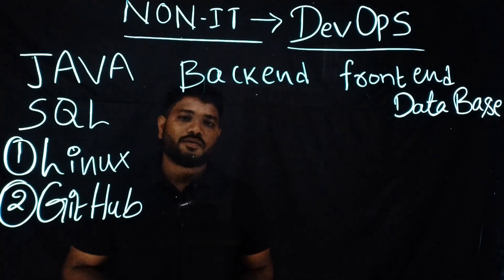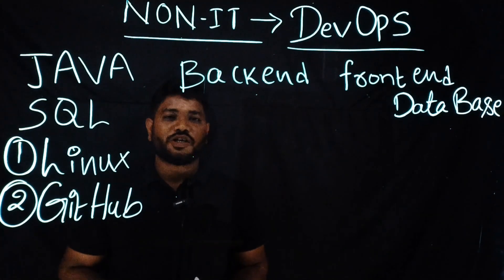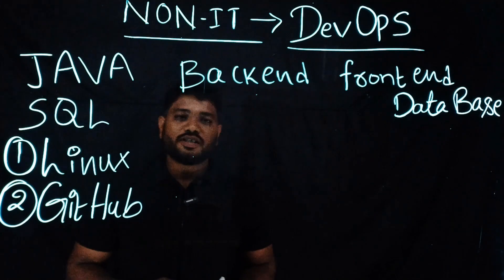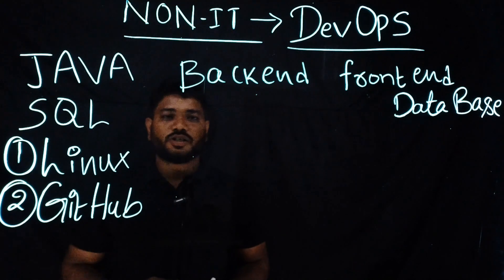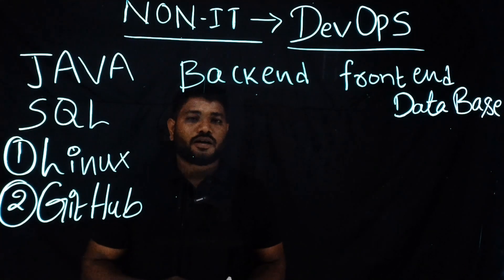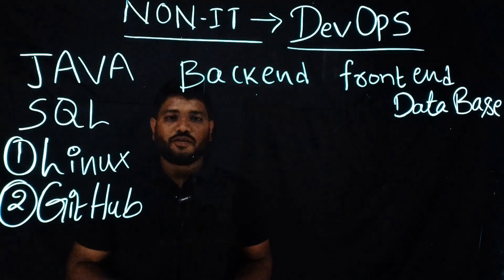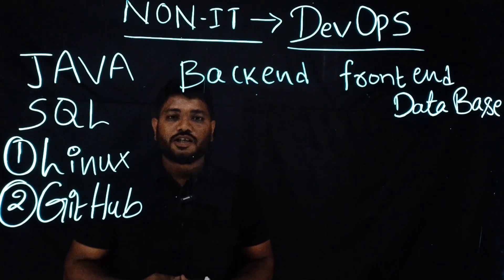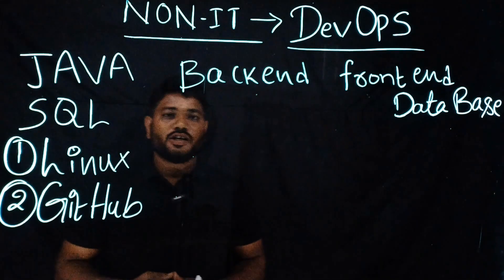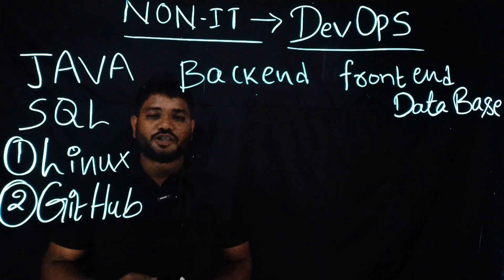Being a DevOps engineer, you should have fair knowledge on automation — how to automate deployment in production or developer environments. For CI/CD — continuous integration, deployment, and delivery — there are many tools available in the current market. As a beginner, I suggest you start with Jenkins. Jenkins is user friendly, and you can easily create jobs, create slaves as runners, configure them, and run all the automation tasks. For enabling all the CI/CD jobs, I suggest learning Jenkins.